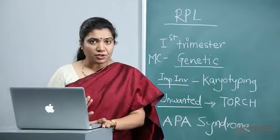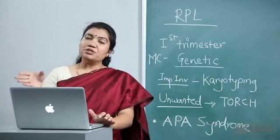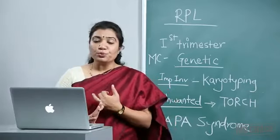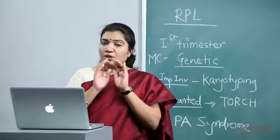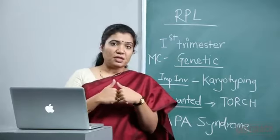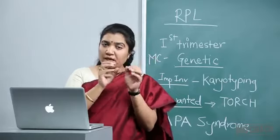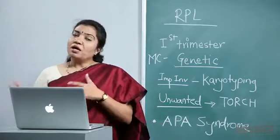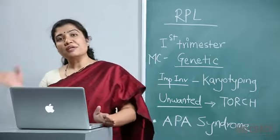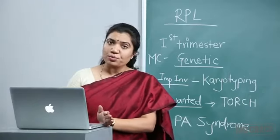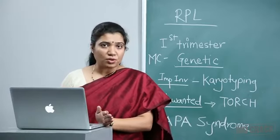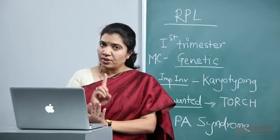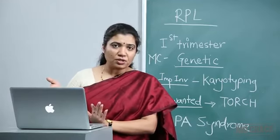The most common cause in second trimester RPL is cervical incompetence — the cervix is incompetent, the os opens up, and the pregnancy aborts. Regarding TORCH infections (toxoplasmosis, rubella, hepatitis, CMV): if a patient gets infected, immunity is formed. Once she has immunity, the next time she is exposed, immunity is already present and it won't cause recurrent abortion. TORCH titers are the most unwanted investigation for recurrent pregnancy losses — they can cause isolated abortion but not recurrent.